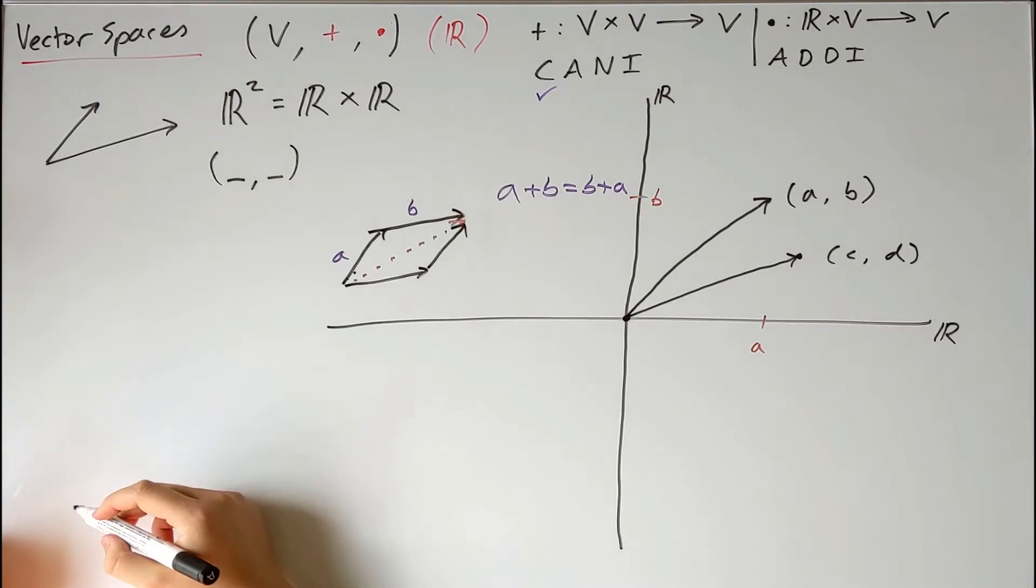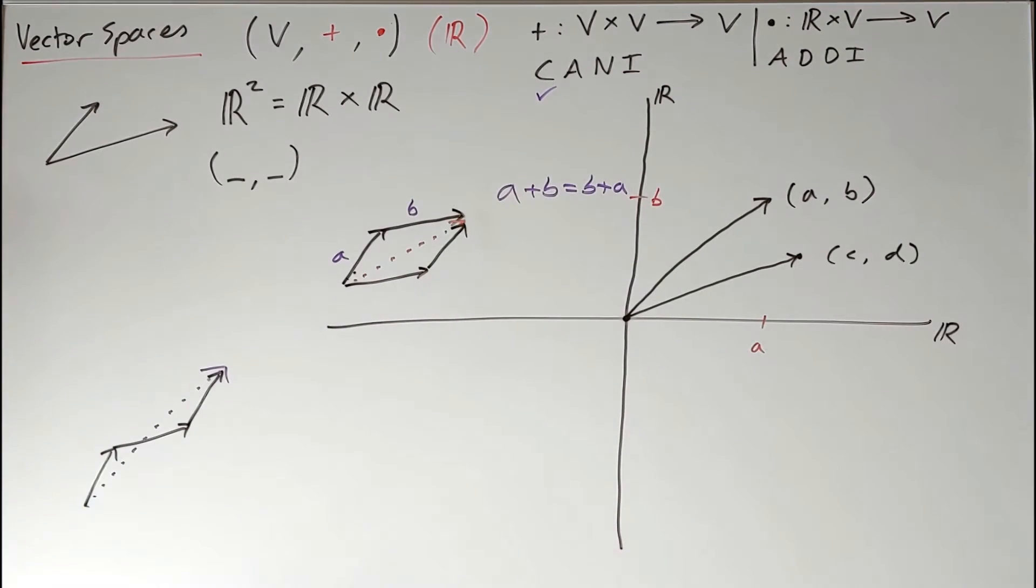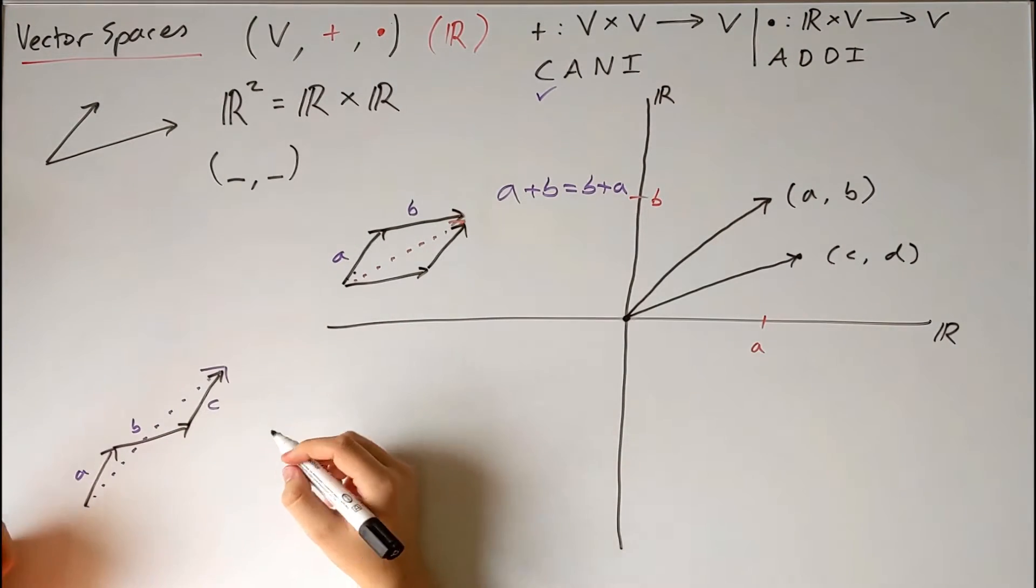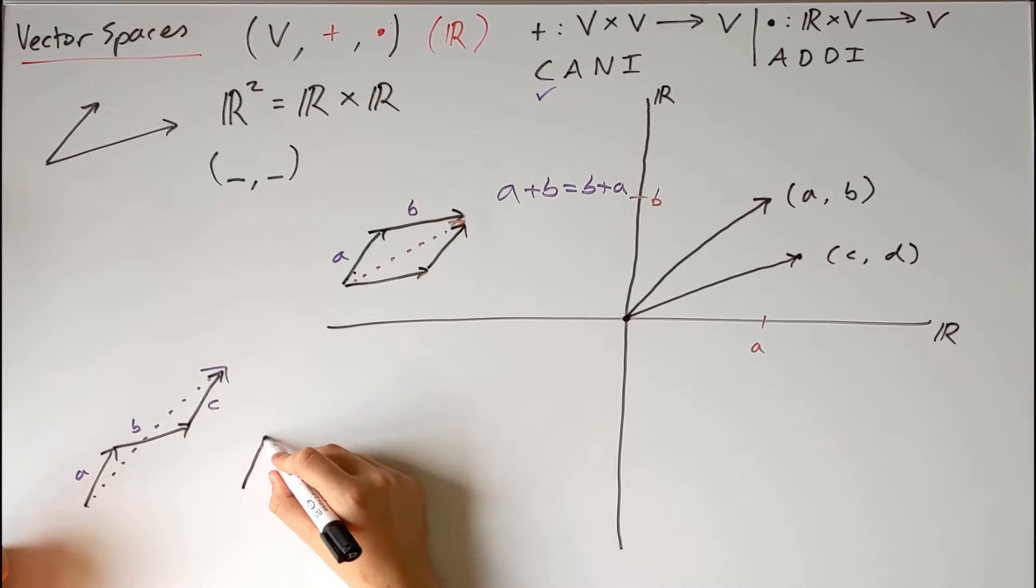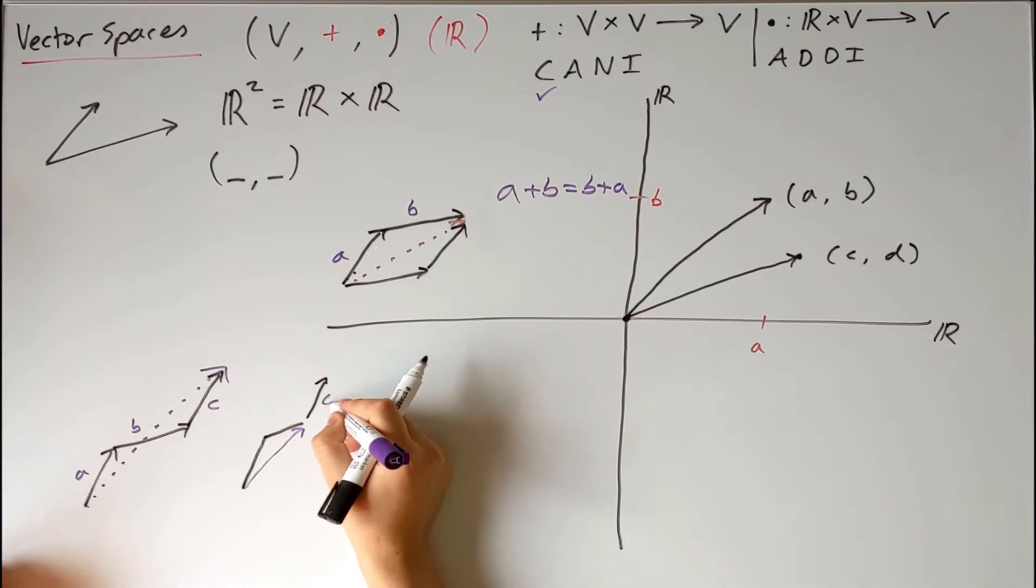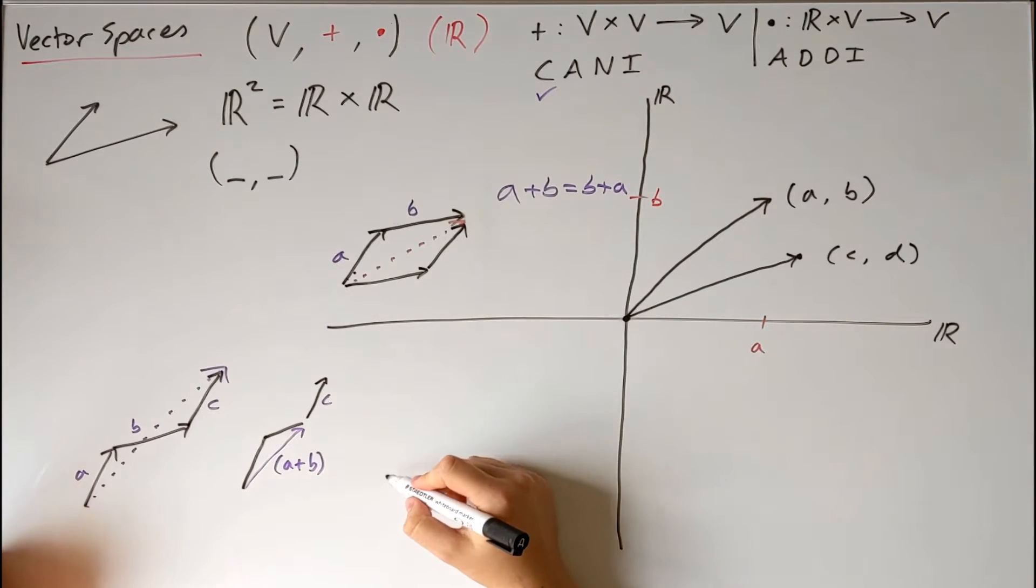So for associativity, we can easily see this just by drawing a few more arrows. A plus B plus C. And now whichever way you draw this, you could write A plus B first, get that arrow, then you could add on to that C, that's C, this is A plus B.